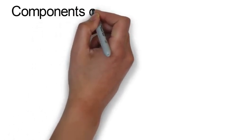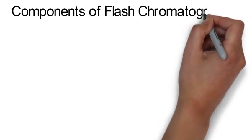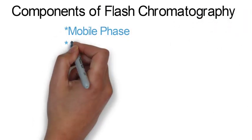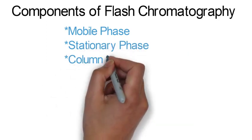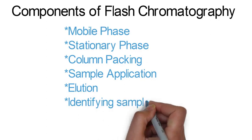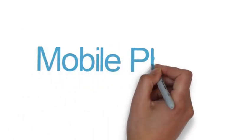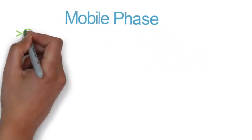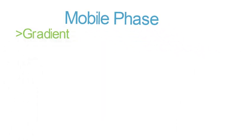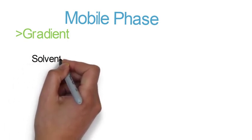So now we will see components of flash chromatography. Firstly, mobile phase. Secondly, stationary phase. After that, column packing, sampling, sample application, elution, and identifying sample by TLC. Now mobile phase: according to the type of elution, gradient is the first one where the solvent has the same composition throughout the run.